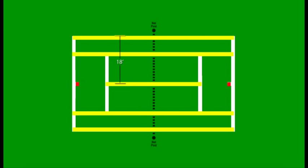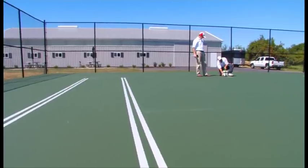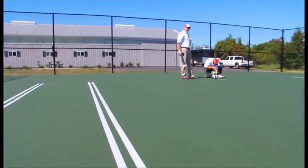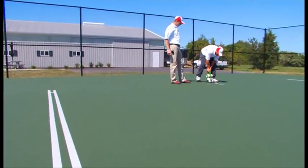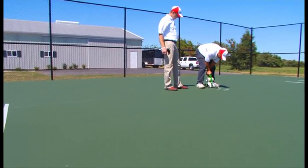Per USTA rules, the baseline may be up to four inches wide and the center mark is four inches inside the baseline. Depending on the desired width of the baseline, tear center line tape to leave masking tape for a center mark showing four inches into the play area.